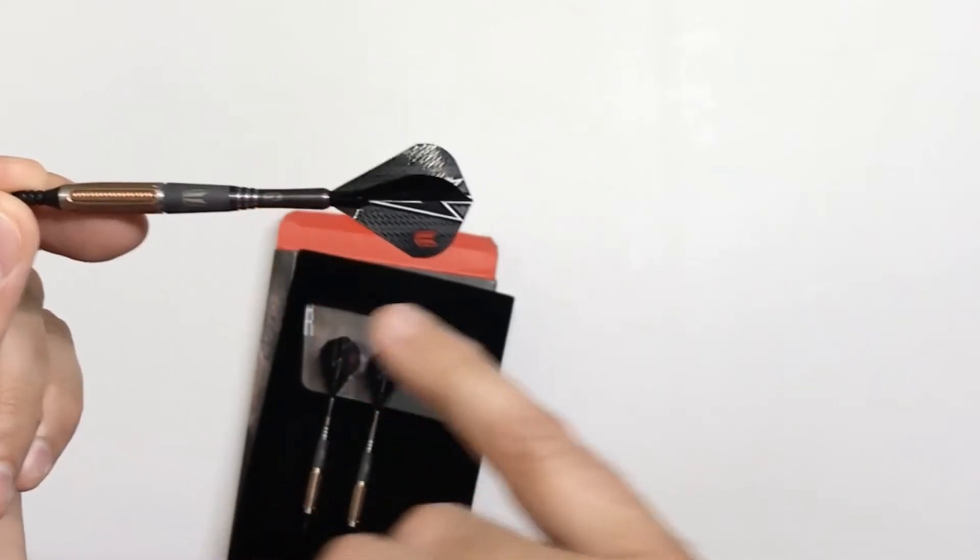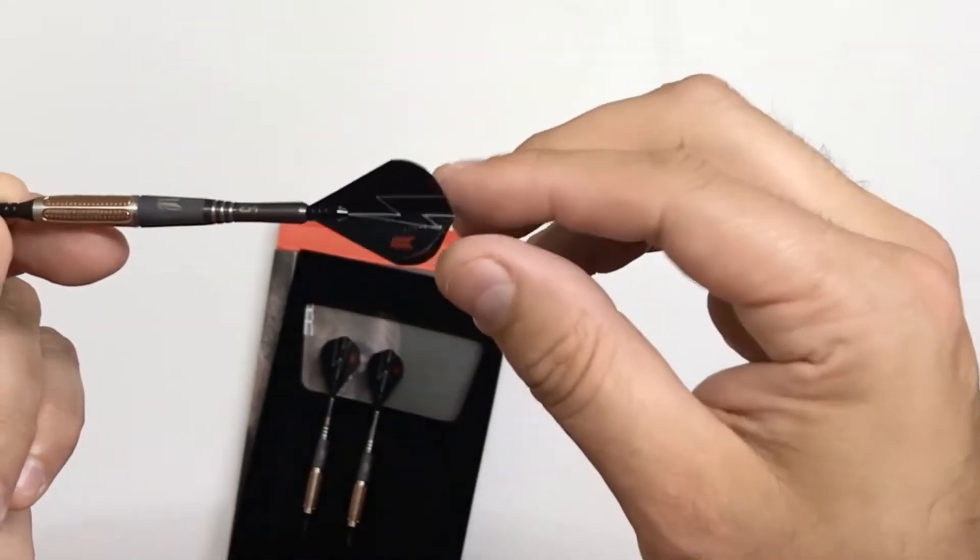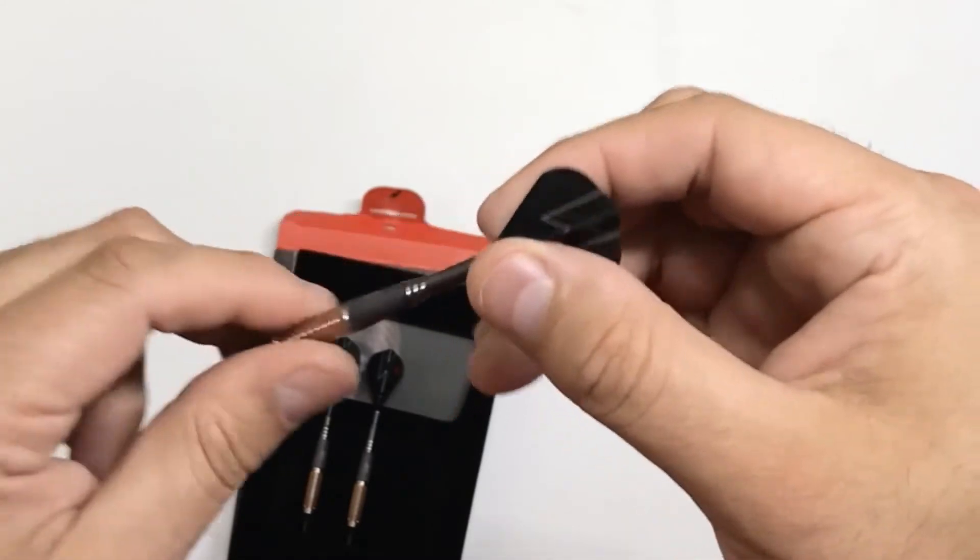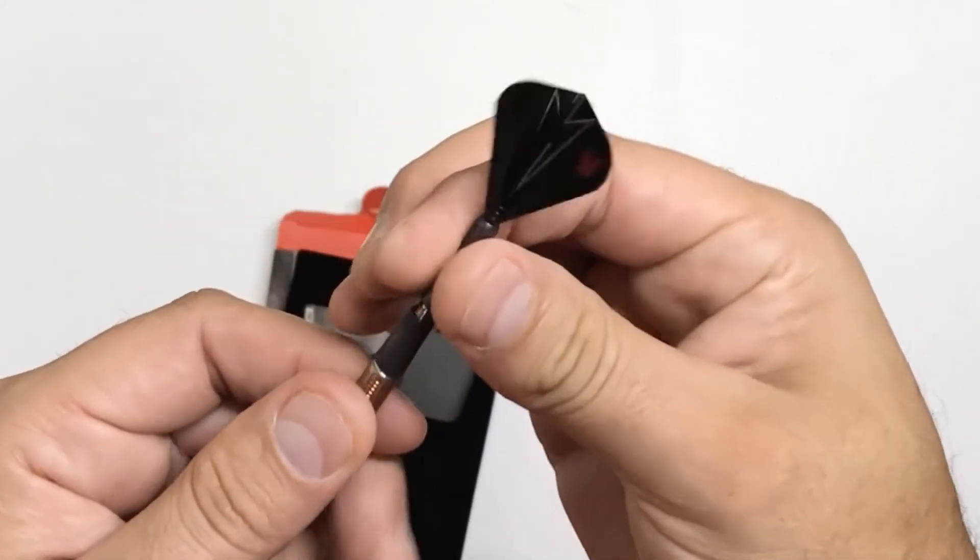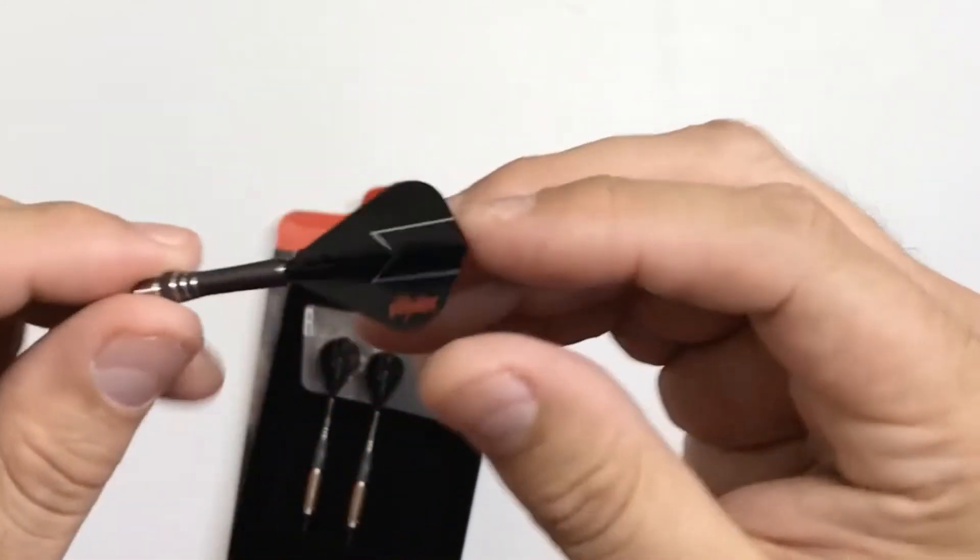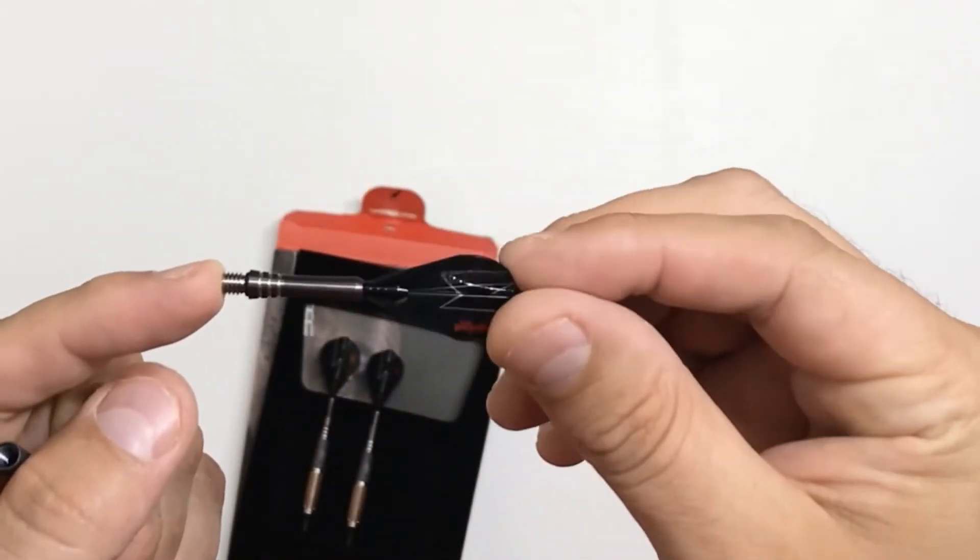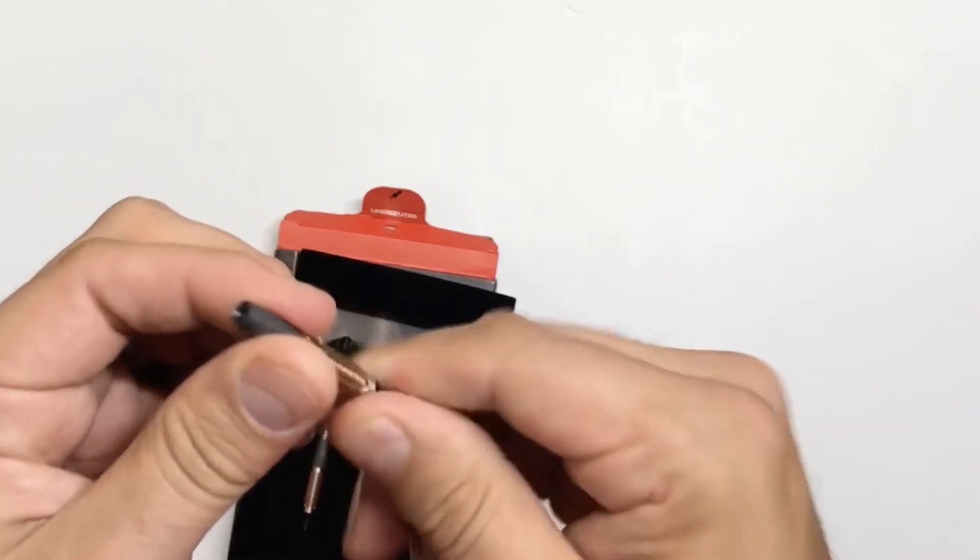Here you can take a look at the shaft and the flight there. We'll take a look at the barrel.